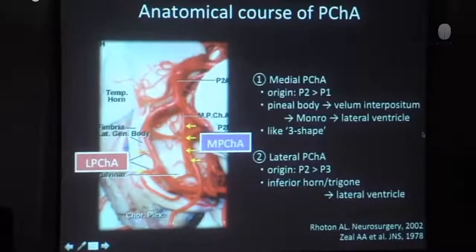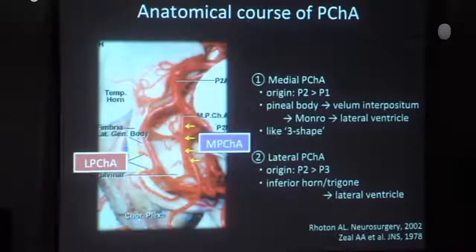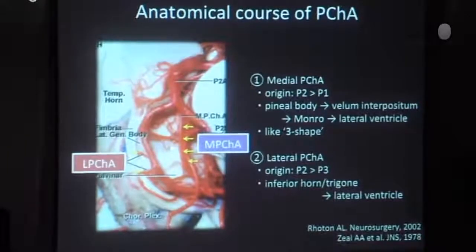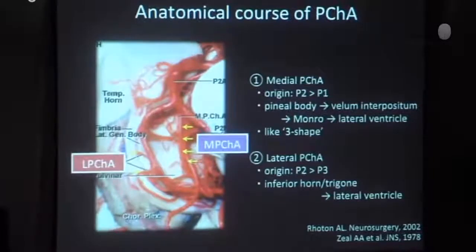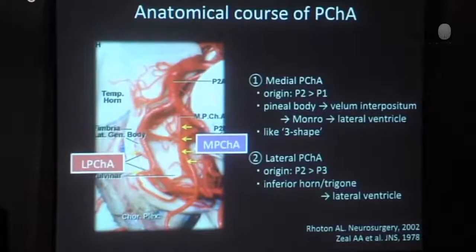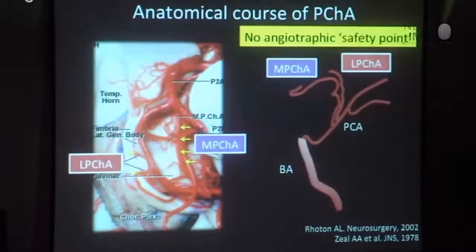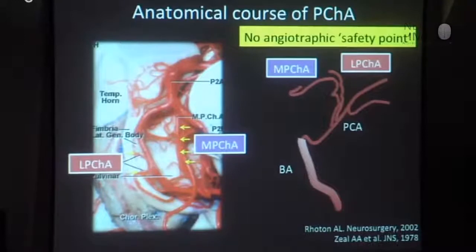The next slide shows the anatomical course of the posterior choroidal artery. Posterior choroidal arteries are classified into medial posterior choroidal artery and lateral posterior choroidal artery. They enter the lateral and third ventricle to supply the choroidal plexus and ventricular wall. It might be difficult to control ischemic complications after embolization through the posterior choroidal artery because no angiographic safety point has been reported thus far.